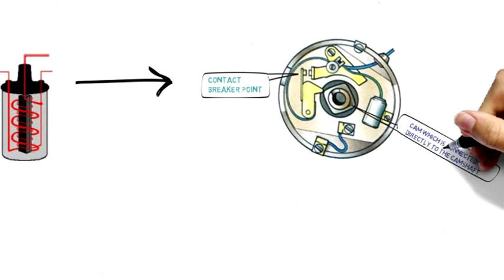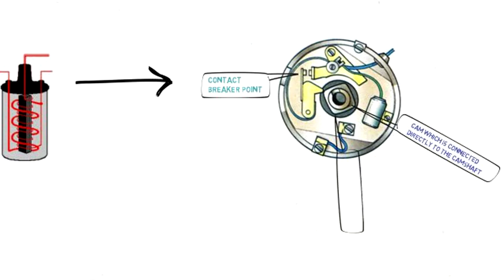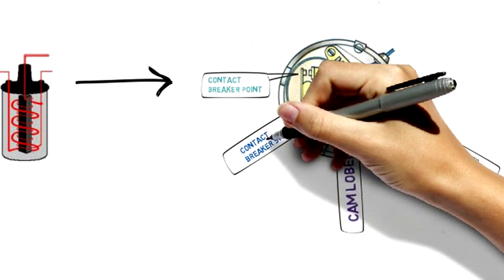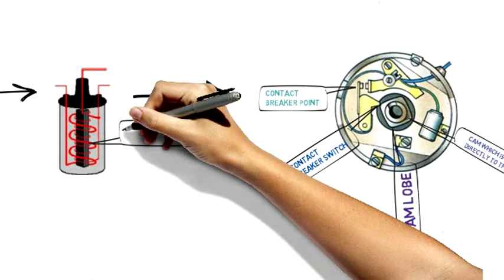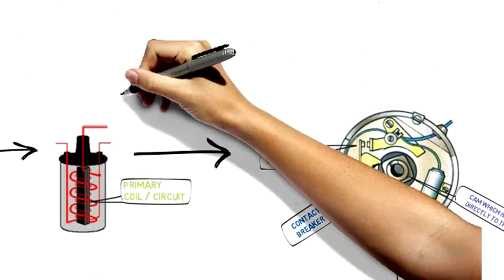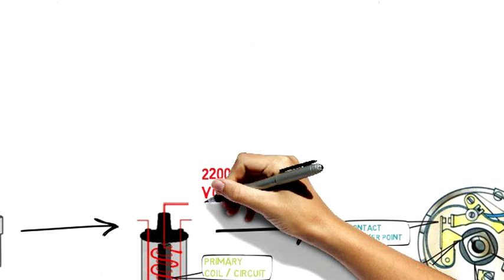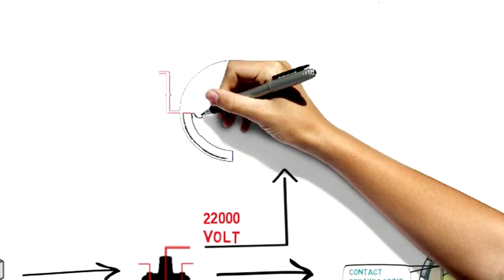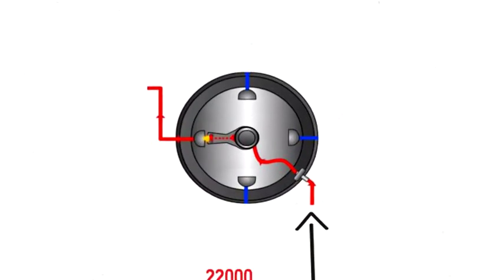A cam connected directly to the camshaft opens and closes the CB point. When the cam lobe pushes the CB switch, the CB points open, causing the current from the primary circuit to break and high voltage to be produced, then transferred to the distributor.